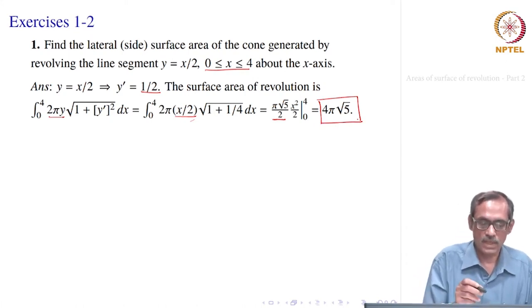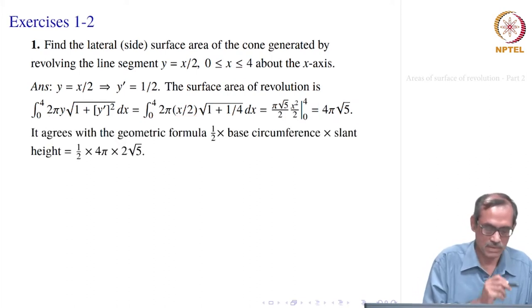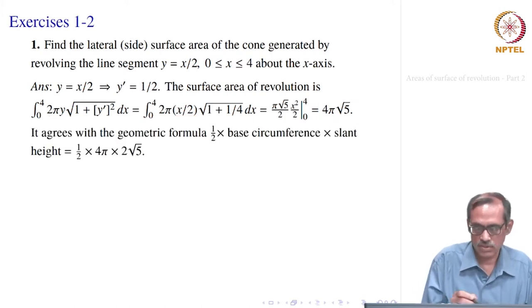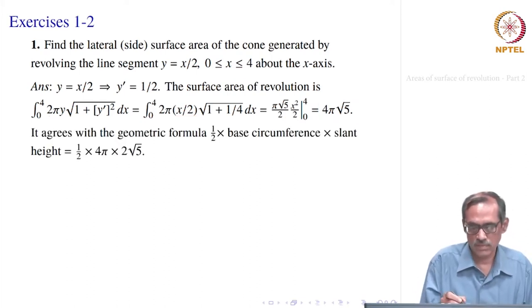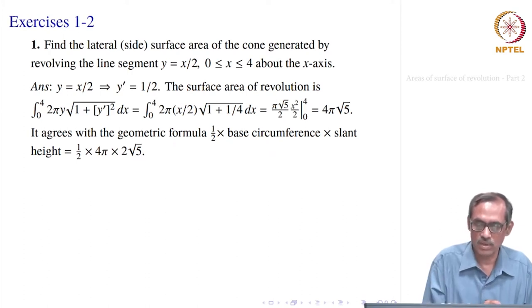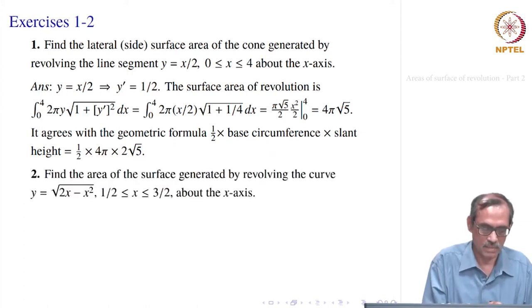Simplifying: 2 gets cancelled, we have π·(√5/2)·x, and integrating x gives x²/2, evaluated at 0 and 4. That simplifies to 4π√5. This is also confirmed by the geometric formula: half base times circumference times slant height for a cone.